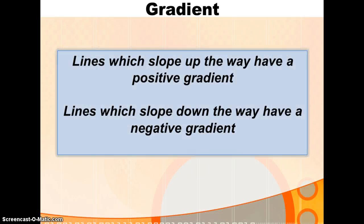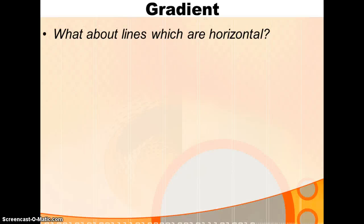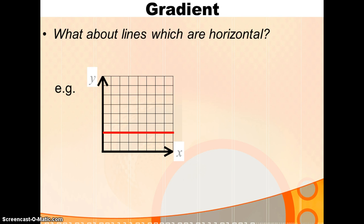So, remember lines which slope up the way have a positive gradient. Lines which slope down the way have a negative gradient. What about lines which are horizontal? So, if we look at this line here, what can you see about a line that's neither climbing up nor sloping down?